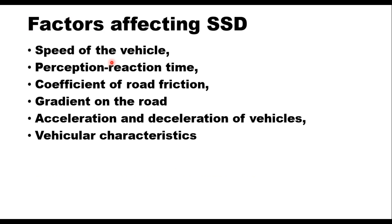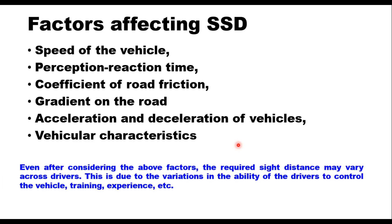These factors include speed of the vehicle, perception reaction time (PRT) — which is the time a driver takes to take the necessary action after seeing an object on the road — coefficient of road friction in the longitudinal direction, gradient on the road, and acceleration and decision capability of the vehicles and vehicle characteristics. Even after considering these factors, the required sight distance may vary across drivers, due to variations in ability to control the vehicle, their training, their experience, and many more factors.